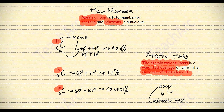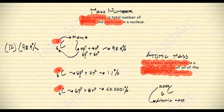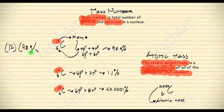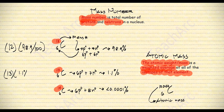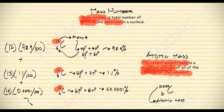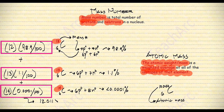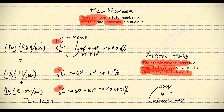To get the weighted average, we have to consider all of this. We multiply the mass number by the percentage abundance of each isotope. Make sure to convert the percentage to decimal form by dividing by 100. After that, we add all the results together, giving us the atomic mass of the element.